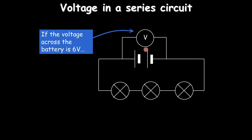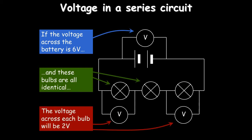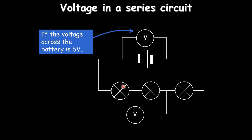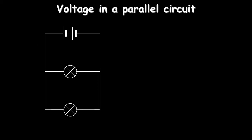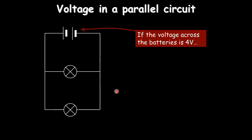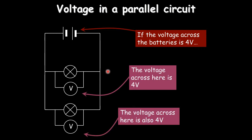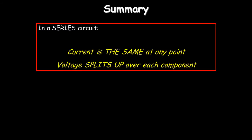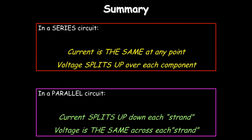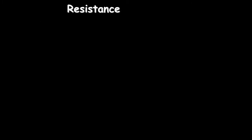In a parallel circuit, both bulbs are connected directly to the battery, so each voltmeter reads the full 4 volts — voltage is not divided. Summary: in a series circuit, current is the same at any point but voltage is split across each component. In a parallel circuit, current splits but voltage stays the same across each branch.